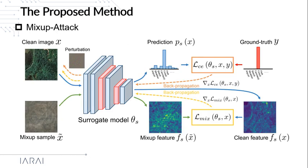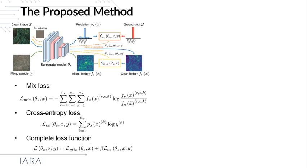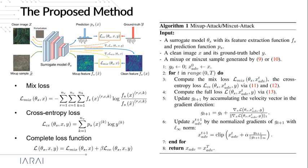Based on the generated virtual samples, we propose the MixUp Attack. It mainly consists of three parts: an input clean image that we want to attack, a MixUp or MixCut sample, and a surrogate model with known parameters. Specifically, we first define the mixed loss by calculating the KL divergence between the features of a MixUp sample and the clean sample. With this loss function, we want the features of the adversarial example to gradually become close to the features of the MixUp sample. We also adopt a cross-entropy loss to assist the attack, and the complete loss function is a weighted combination of these two losses.